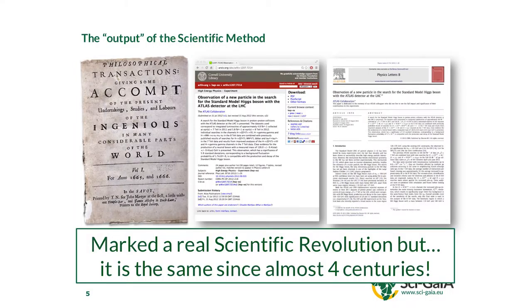At the end, what scientists do is write papers — scientific papers, reports. The onset of the first journals fully devoted to scientific papers marked what people call the first scientific revolution. This happened in the middle of the 17th century.